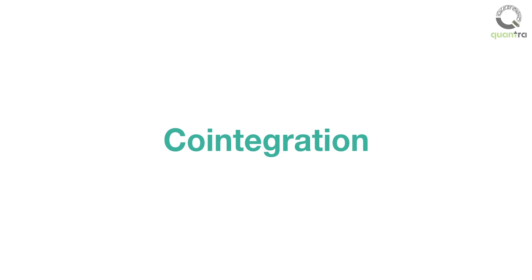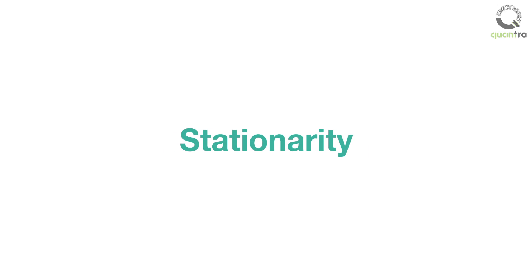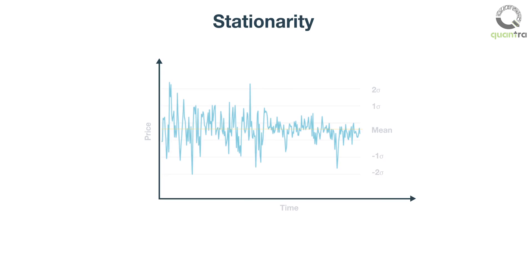In this video, we will discuss co-integration. To understand co-integration, it is essential to first understand the concept of stationarity. A stationary time series is the one whose statistical parameters such as mean and variance do not change over time.